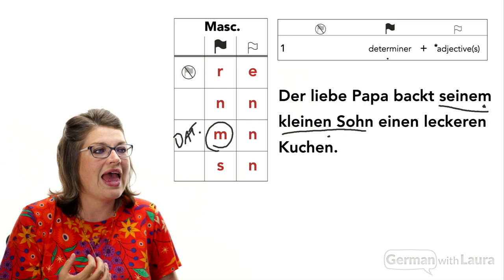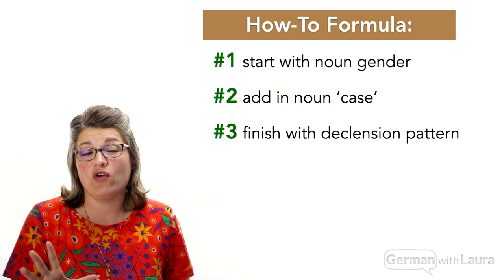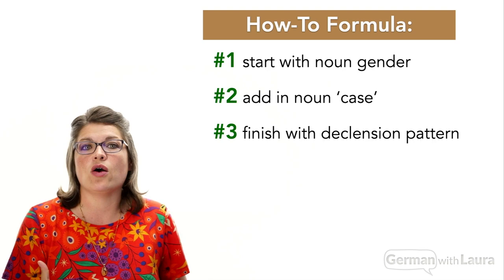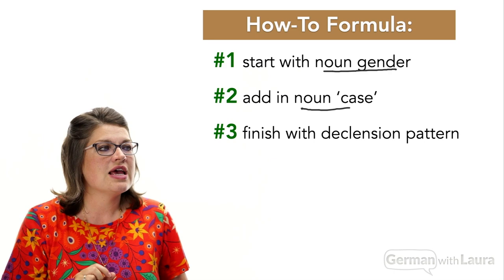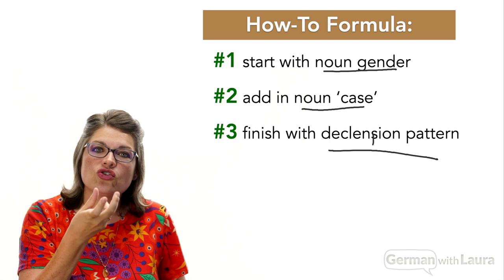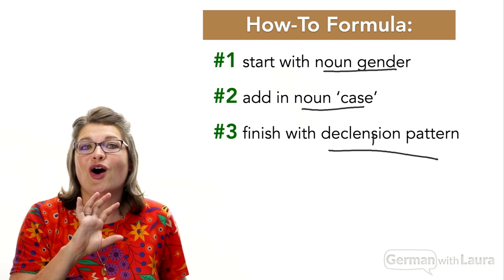So now on a meta level, you understand that those five to seven different versions of every German noun are a matter of three elements: noun gender (static, unchanging), noun case (always changing), and declension pattern. These three elements interact to give us those specific declension combinations on the determiners and adjectives coming in front of nouns.